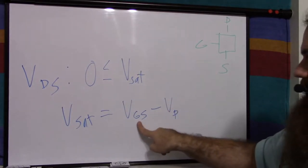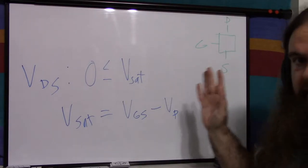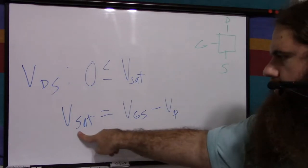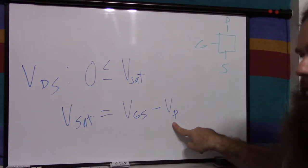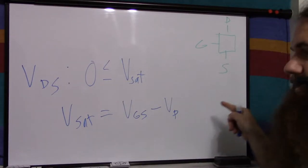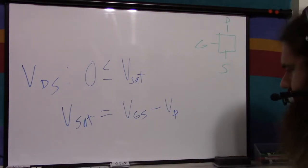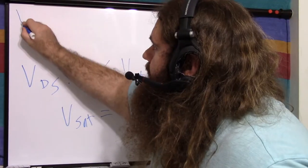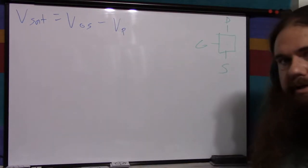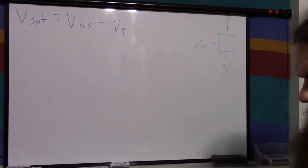Vsat depends on VGS and ranges from zero to VP in magnitude. Remember: VGS and VP are negative for an N-channel, and VDS is positive. The formula for reference is: Vsat = VGS − VP. Now we need to know how the voltage affects the current, which brings us back to IDSS.